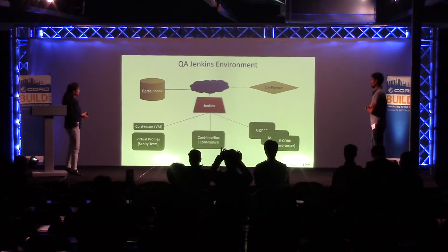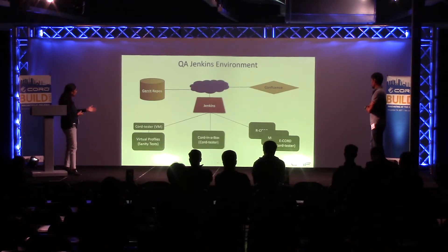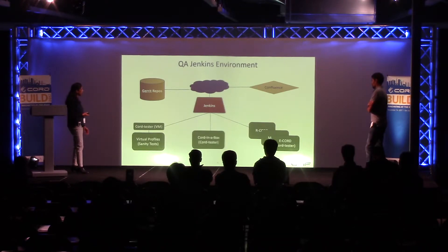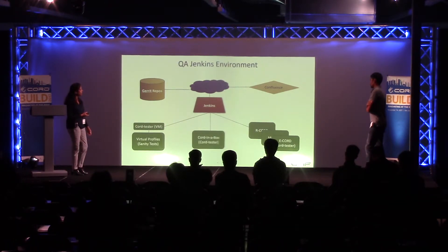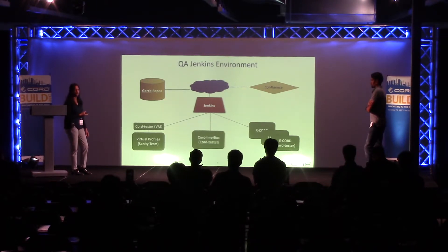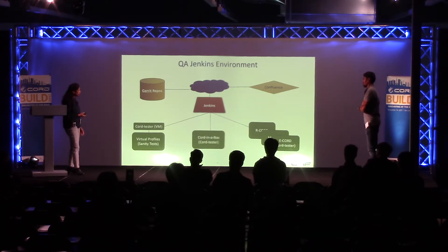This picture gives a broader view of how we use the Jenkins environment. Jenkins builds using Gerrit, and we have these test environments: on the left is the virtual profiles environment, in the middle is CORD-in-a-Box, and on the right are the pods. Currently at ONF we are building all the pods and validating all of them. The picture also shows how CORD Tester automation framework is used, demonstrating that CORD Tester can be deployed on any kind of test environment and launched after a Jenkins build.